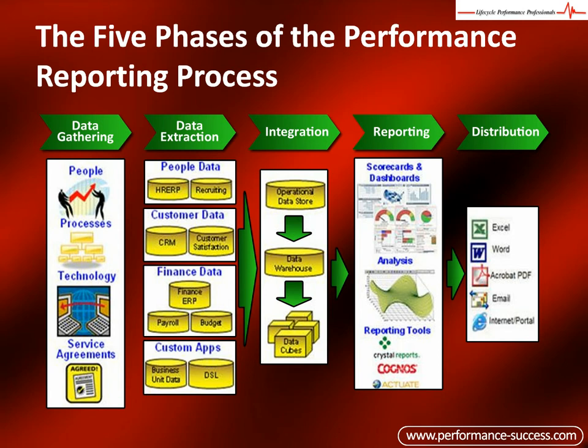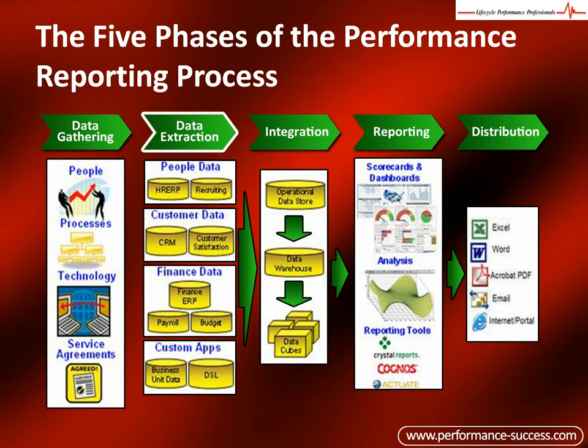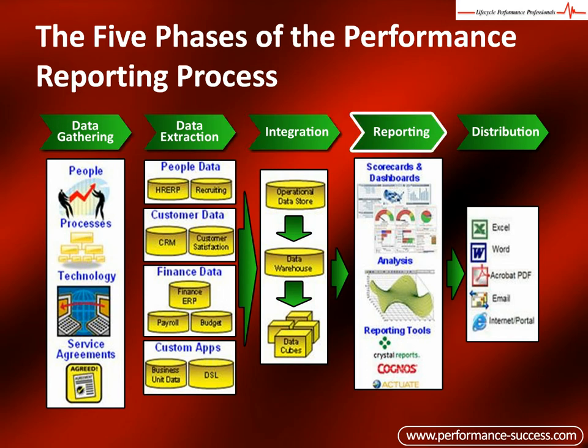The performance reporting process helps organizations understand the stages of data as it transforms to meaningful information and is distributed throughout the organization. The performance reporting process consists of five phases: data gathering, data extraction, integration, reporting, and distribution.